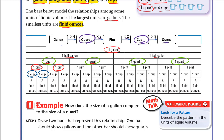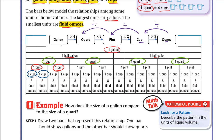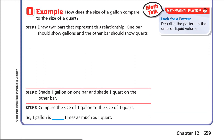From quart to ounce, multiply two by two by eight: two times two is four, times eight is 32. You can use this chart to solve any problem. Remember: if you go from the smallest unit to the largest, you divide. From ounce to cup divide by eight, cup to pint divide by two, pint to quart divide by two, quart to gallon divide by four.